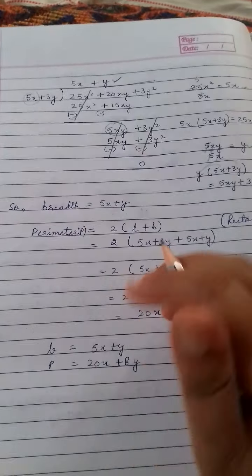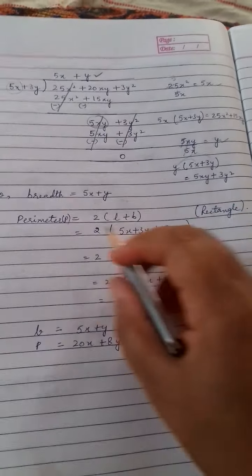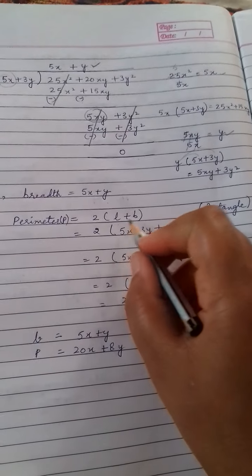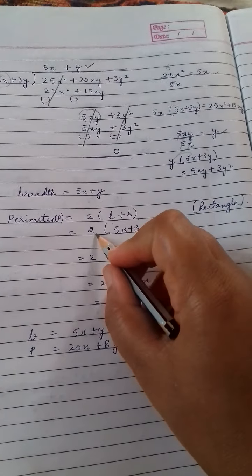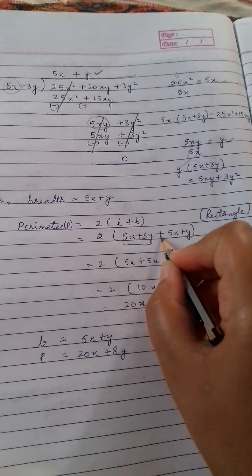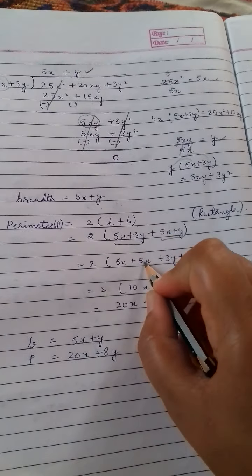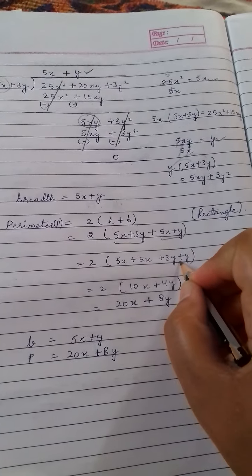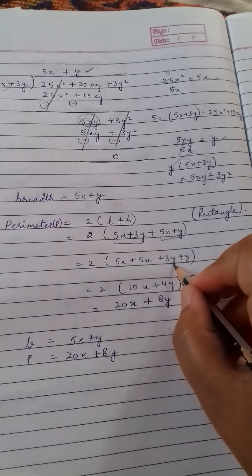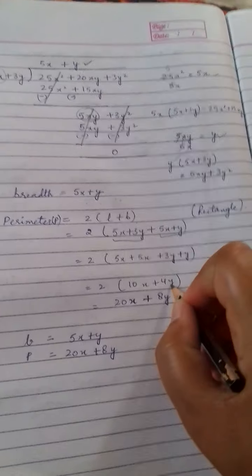One part is solved. Then he asked also find the perimeter. We know perimeter of rectangle is twice length plus breadth. So twice length is this plus breadth is this. Now 5x plus 5x, 3y plus y. Now 5x plus 5x, 10x. 3y plus y, 4y.